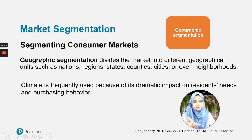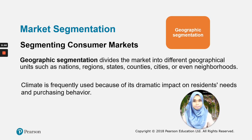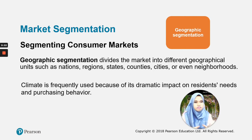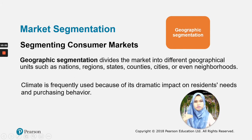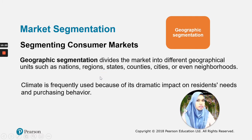Geographic segmentation divides the market into different geographical units such as nations, regions, states, countries, cities, or even neighborhoods, with a different marketing mix for each geographic location. Climate is also a frequently used geographic variable because of its dramatic impact on residents' needs and purchasing behavior. Weather, temperature, and seasons all affect what products people need.